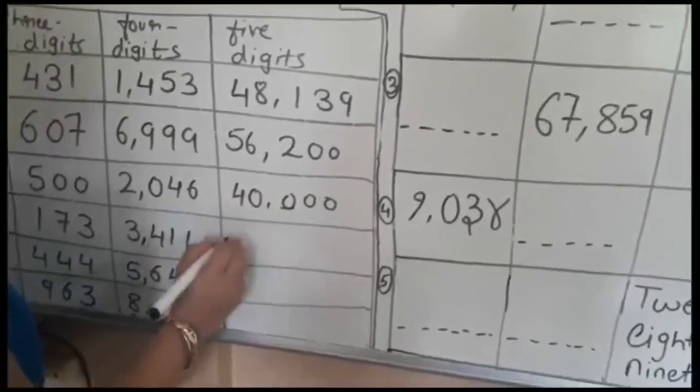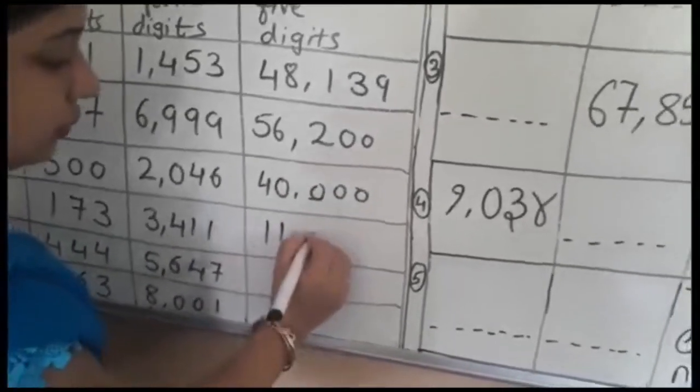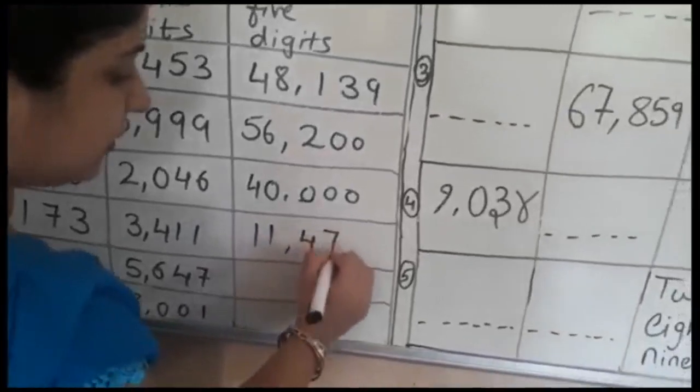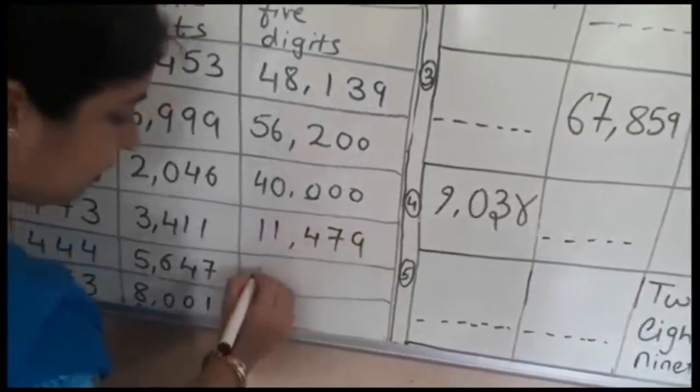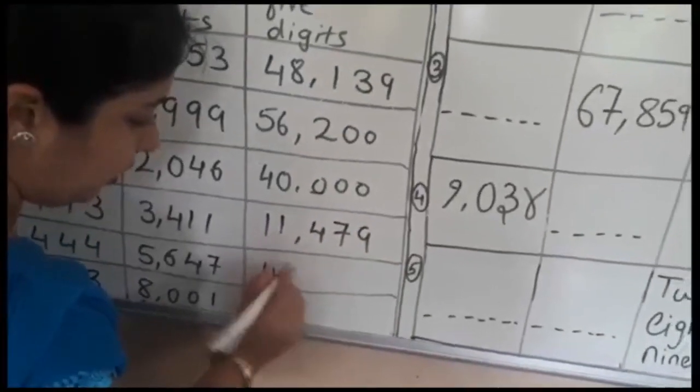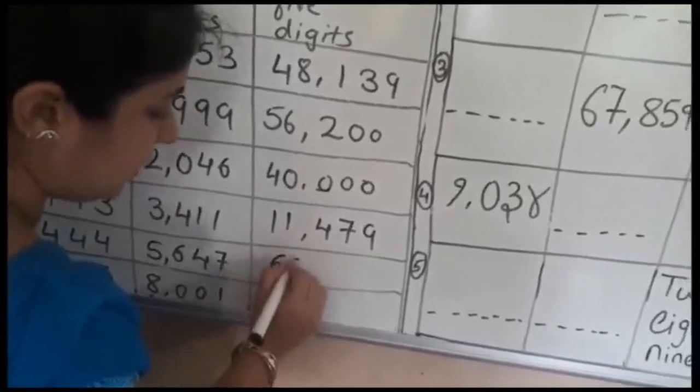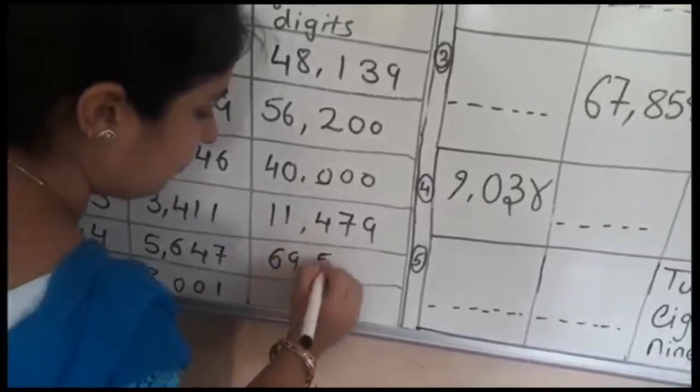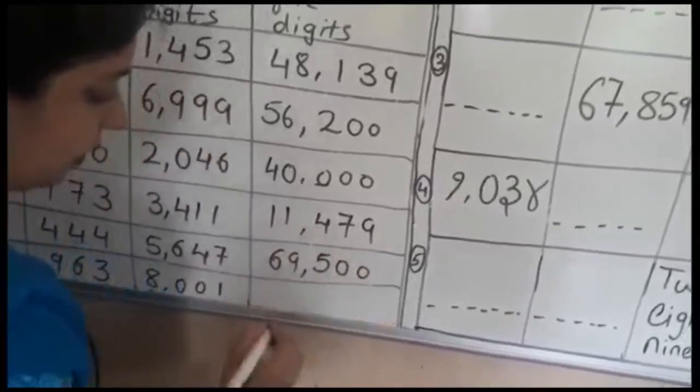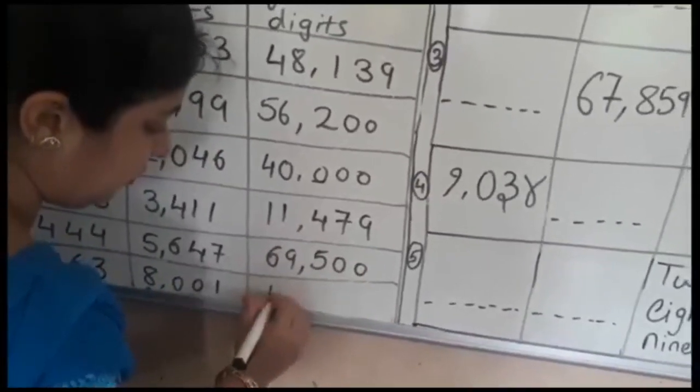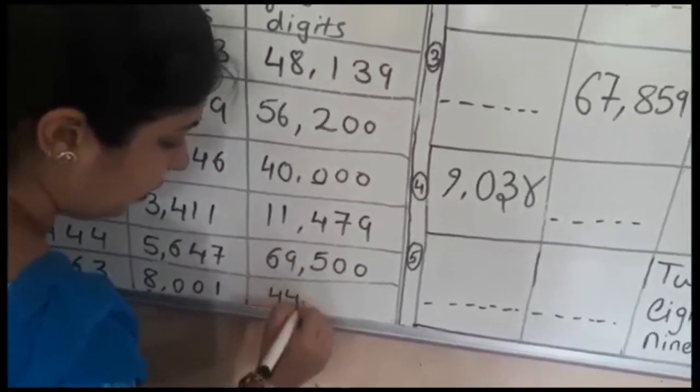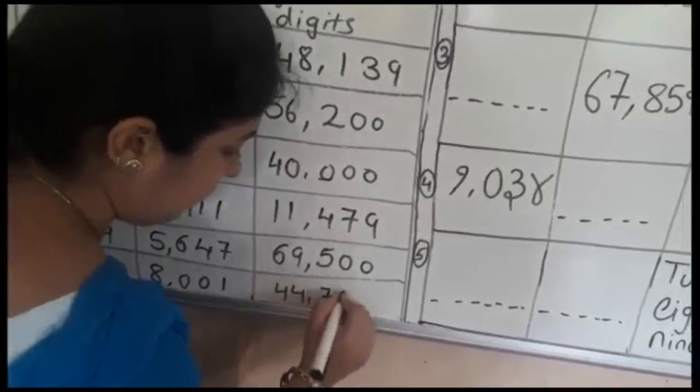Five digit numbers: 11,479, 69,500, 44,710.